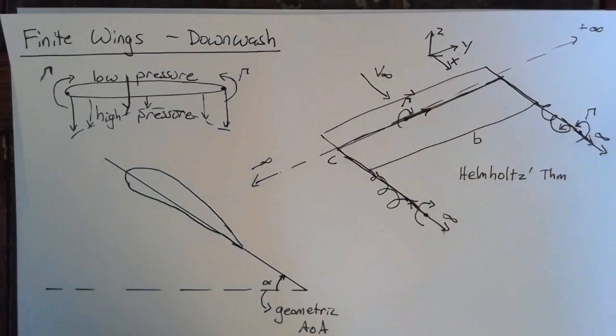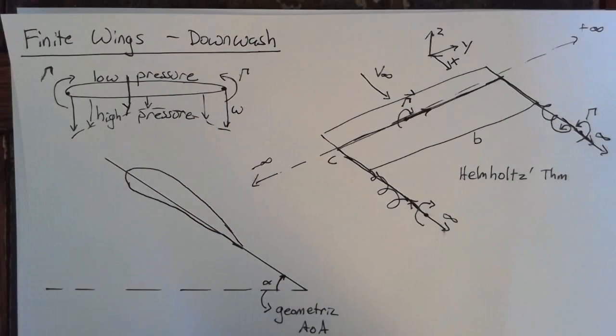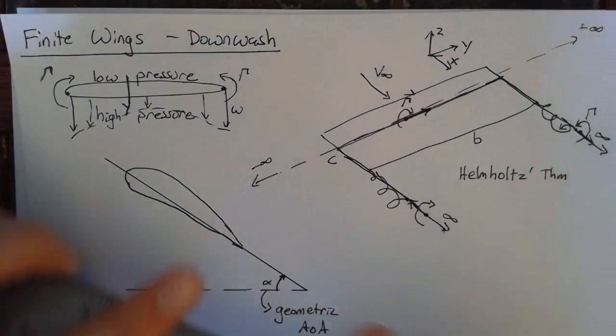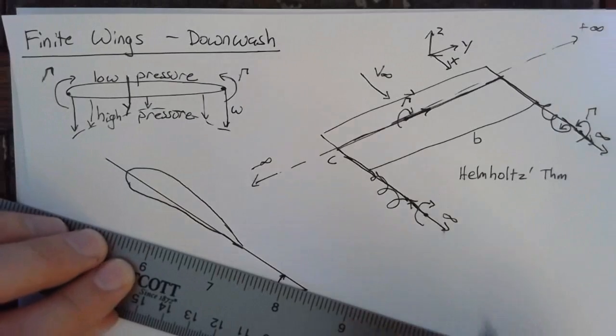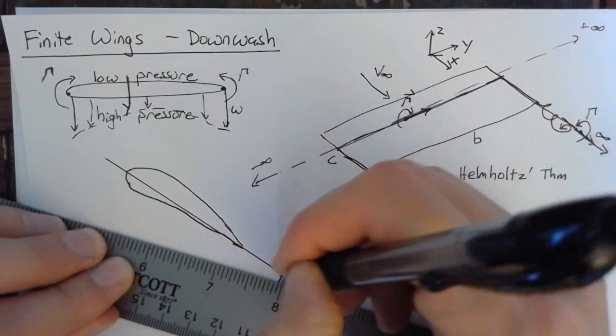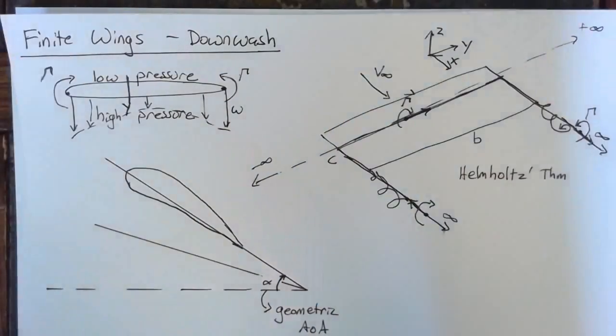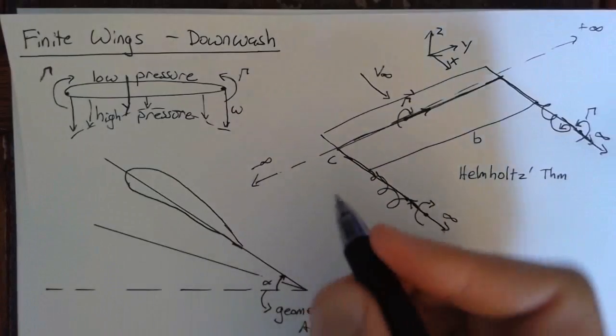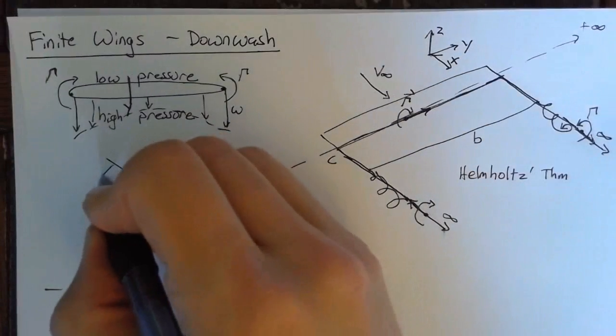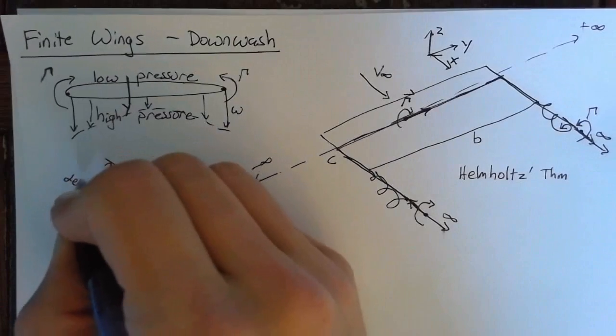Now, the effect of the downwash, this downwash w, is to create an effective angle of attack that is less than the actual angle of attack. So let's draw the effective angle of attack. So this angle here, between these two lines, is what we're calling the effective angle of attack.